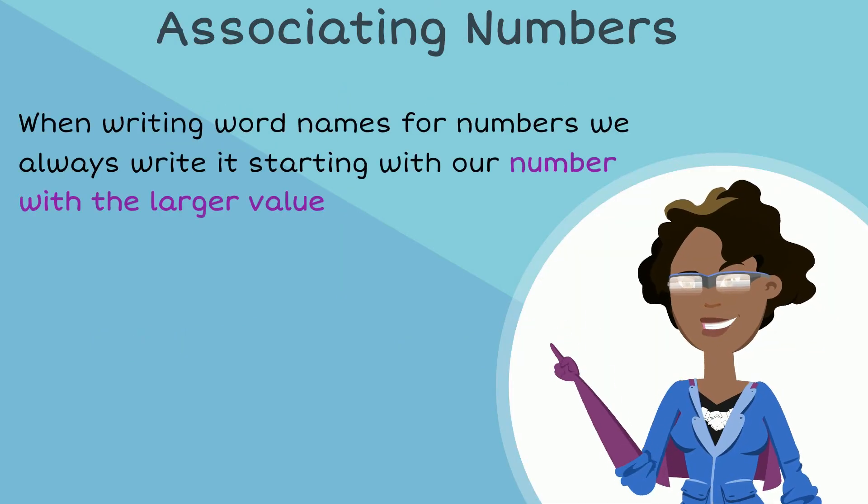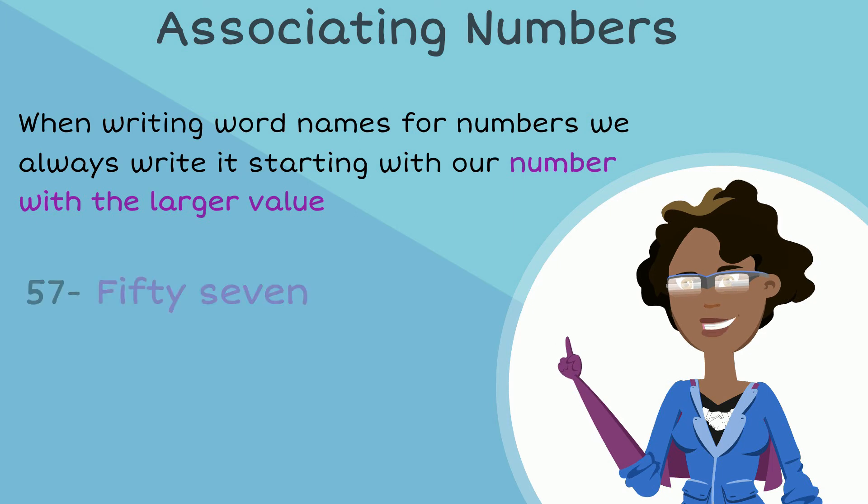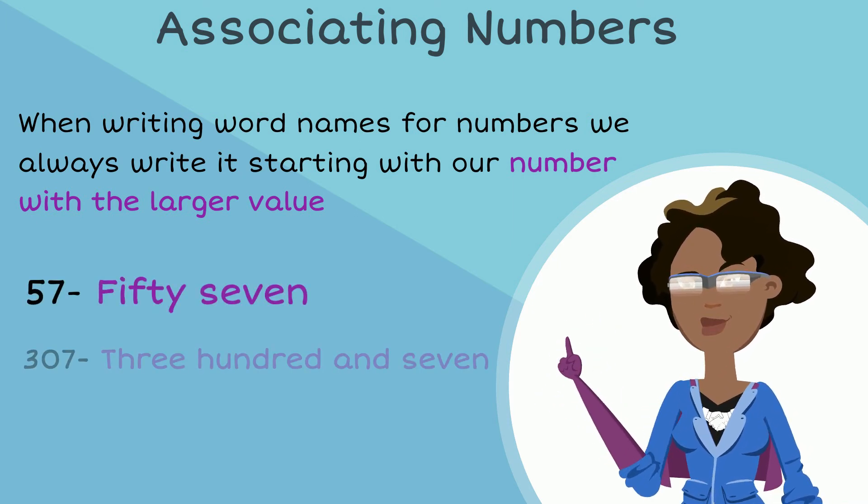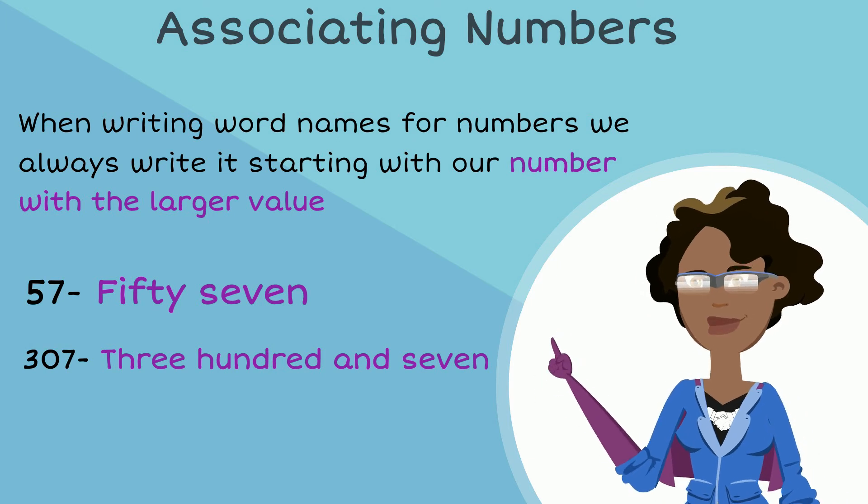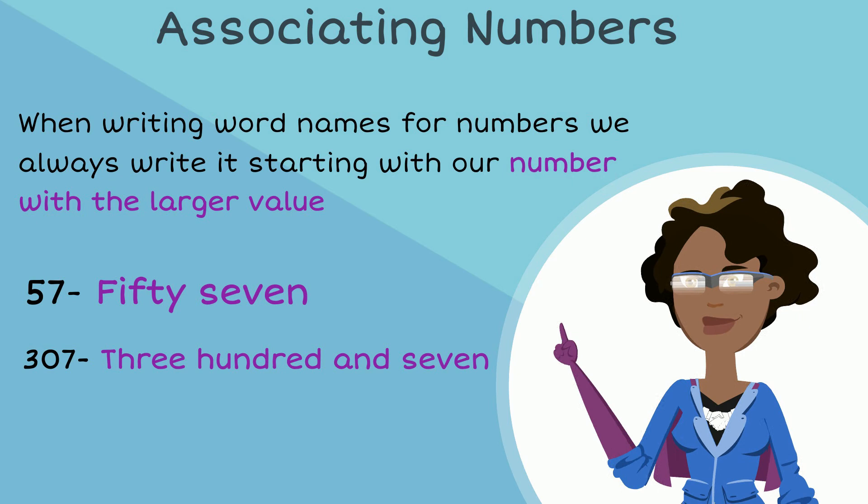When writing word names for numbers, we always write it starting with our number with a larger value. For example, this is 57 and not 750. And for example, this is 307, not 7 of 300. So the numbers that carry the higher values are what we say in words first.